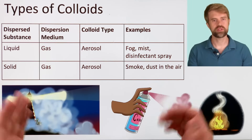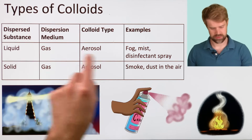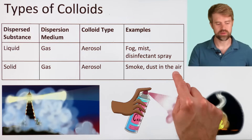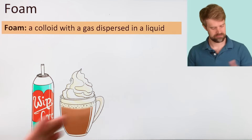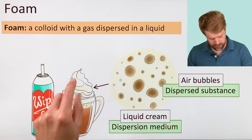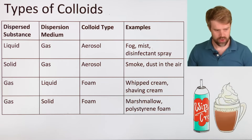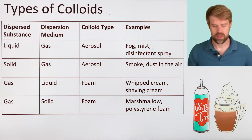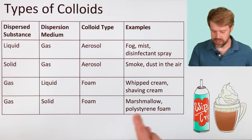We can build a table for the different types of colloids. We've talked about two types of aerosols: liquid dispersed in gas — examples include fog, mist, and disinfectant spray — and solid dispersed in gas — examples are smoke and dust in the air. Here is foam, a colloid where a gas is dispersed in a liquid medium. Think of whipped cream: tiny air bubbles dispersed through liquid cream. Shaving cream is another example of foam. Foam can also be made by dispersing a gas through a solid — that's how marshmallows and polystyrene packing peanuts are made.